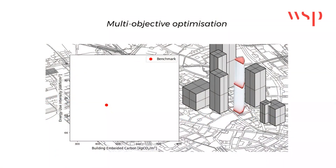Let's start by simplifying the data by showing two performance metrics: energy use intensity and building embodied carbon. The red dot represents the benchmark design at the concept stage. Its performance can be calculated, but how does it compare to all the possibilities within the design space?